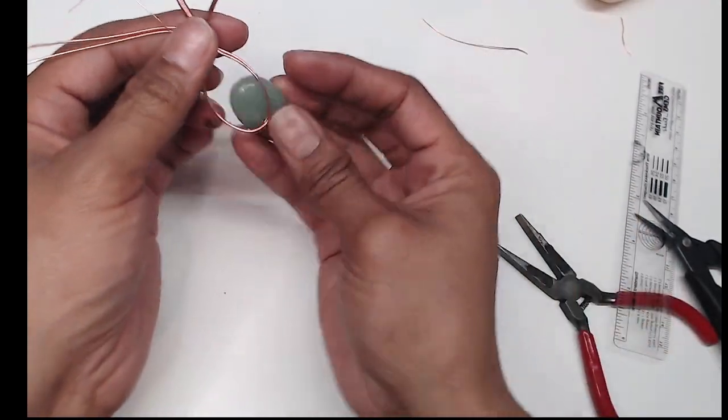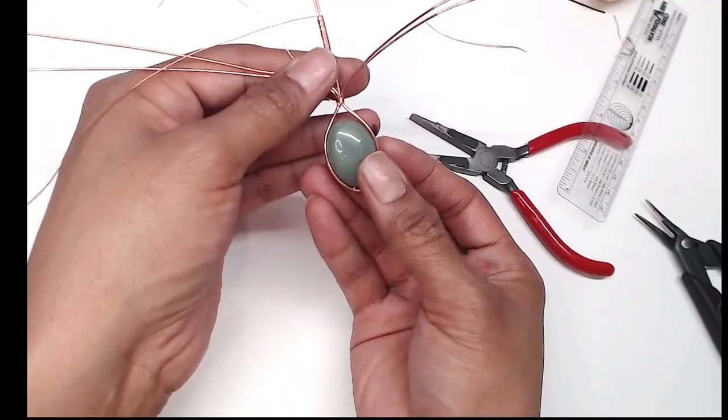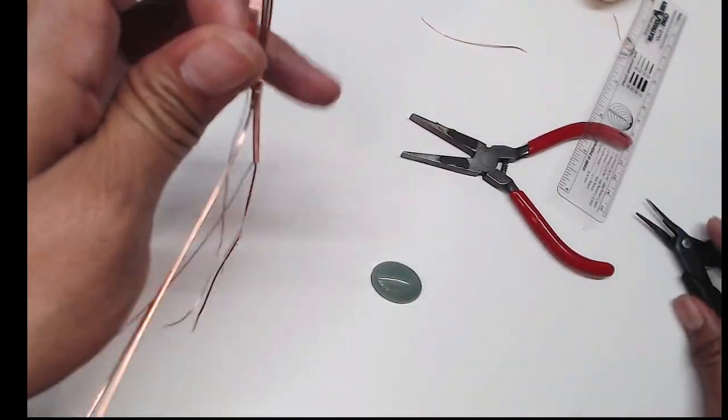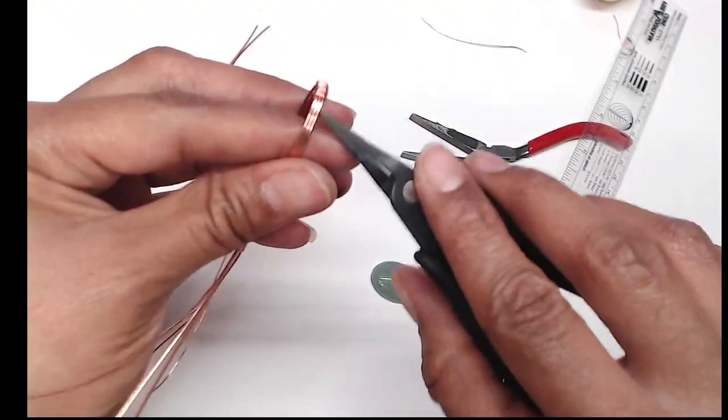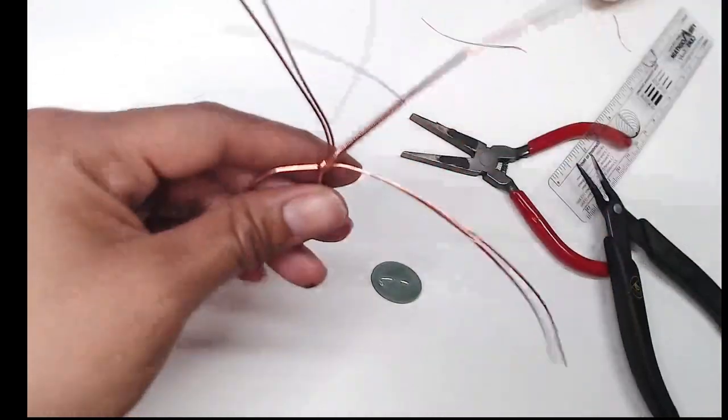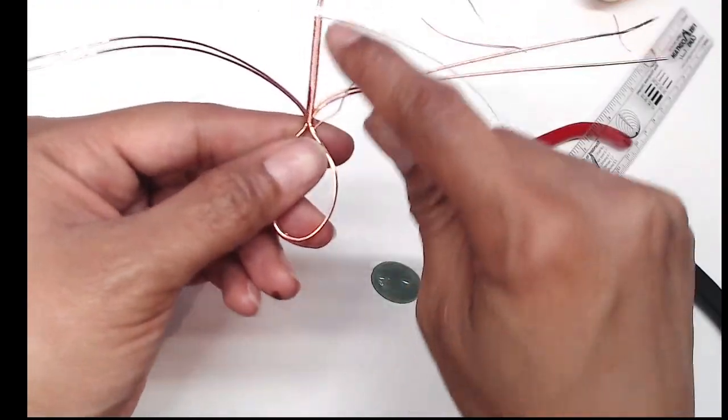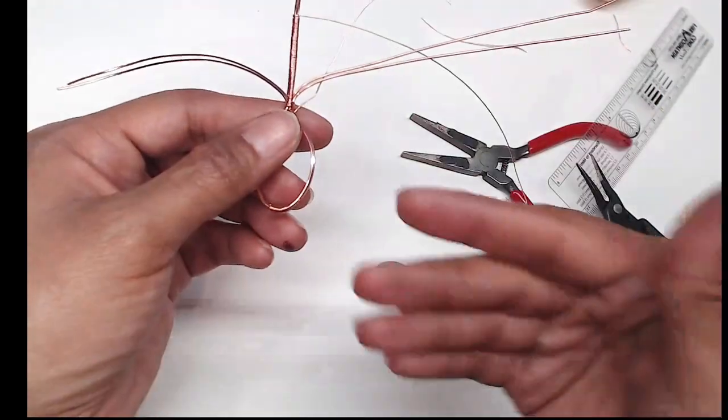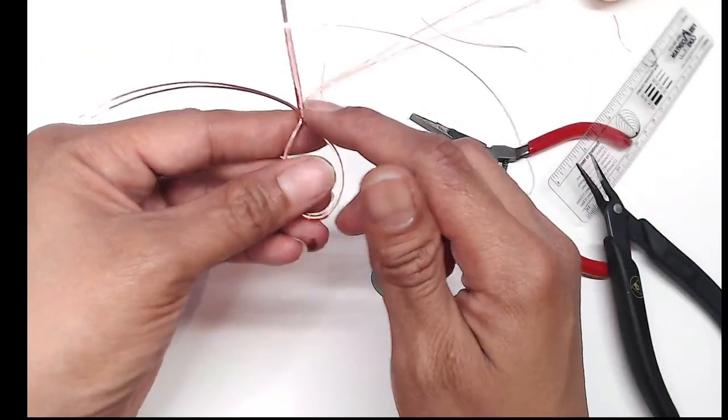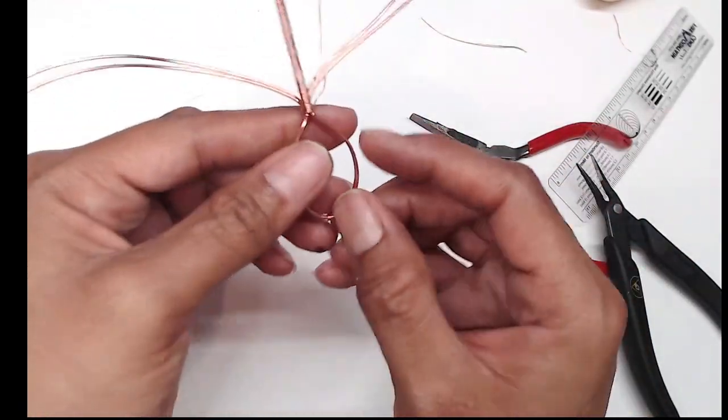Now fit your stone and make sure everything is looking good. For the next step you want to make sure that the bail is at the front and that the remaining wires are at the back just like this.